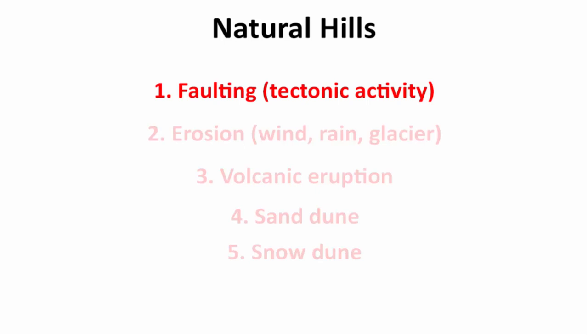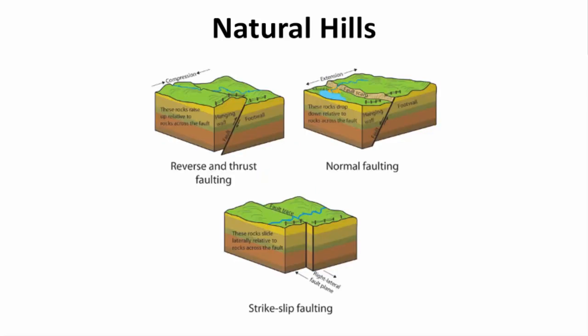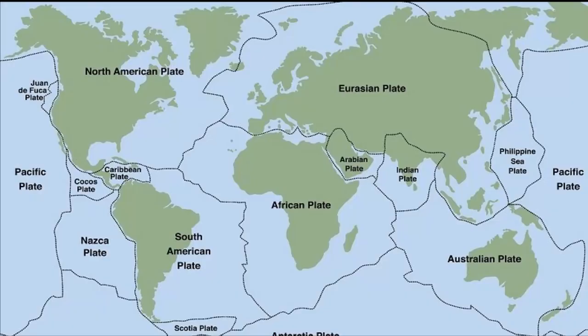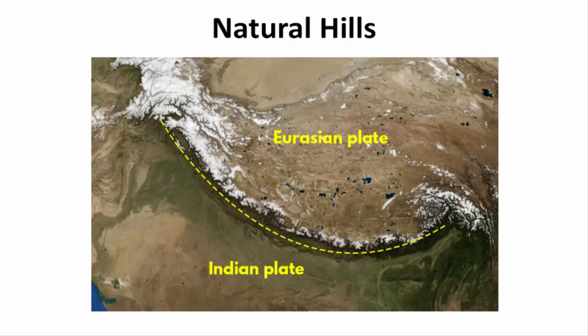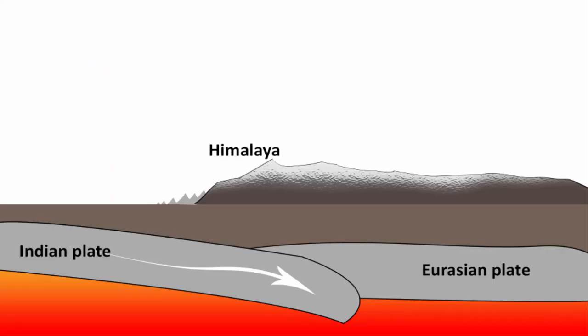One is faulting. A fault lies at the major boundaries between Earth's tectonic plates. These tectonic plates are constantly moving and changing the landscape. The Himalayas are a good example — they were once tiny hills. The Himalayas continue to grow because of faulting activity beneath the Earth's surface.